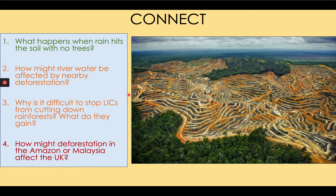2. How might river water be affected by nearby deforestation? Well, if the soil on the formerly rainforest-covered land is washed away by rainfall, then the soil may end up in the river, which may lead to the water becoming less clear, or the water becoming polluted. You're going to learn more about that in this lesson. 3. Why is it difficult to stop LICs from cutting down rainforests? What do they gain from it? Well, the key reason it's difficult is because deforestation provides an income to people, so that even though there are important negative impacts, these are often outweighed in people's minds by the positives.